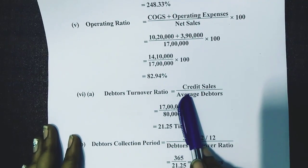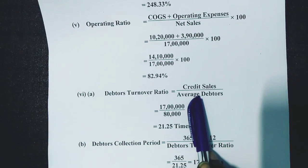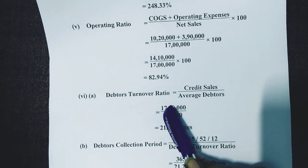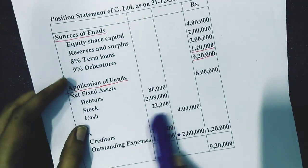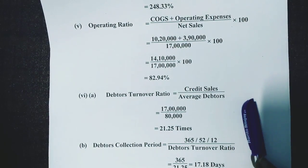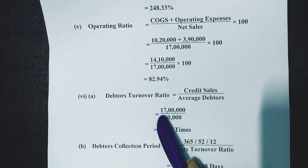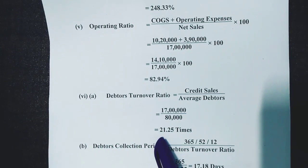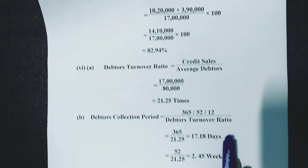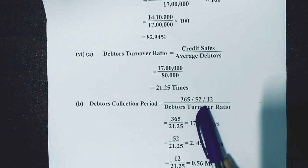The next one is the debtors turnover ratio. The formula is credit sales divided by average debtors plus average bills receivable. Sales are rupees 17 lakhs. The average debtors amount comes from the balance sheet — it is rupees 80,000. Average bills receivable has not been provided in this question. So 17 lakhs divided by 80,000 gives 21.25 times. Always remember that debtors turnover ratio and creditors turnover ratio are expressed in times.